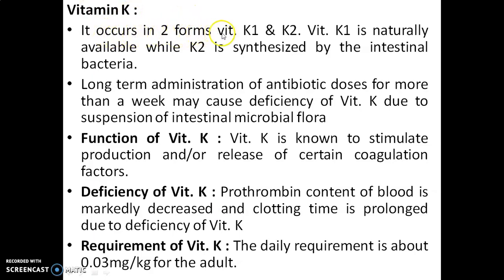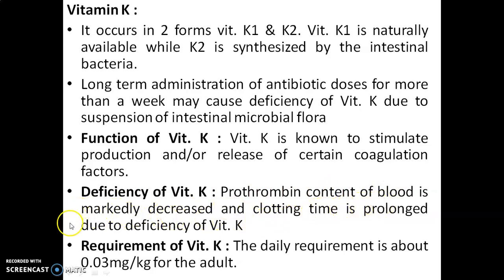Vitamin K occurs in two forms: vitamin K1 and K2. Vitamin K1 is naturally available, while K2 is synthesized by intestinal bacteria. Long-term antibiotic administration for more than a week may cause deficiency of vitamin K due to suppression of intestinal microbial flora. Vitamin K stimulates production and release of certain coagulation factors. In deficiency, prothrombin content of blood is markedly decreased and clotting time is prolonged. The daily requirement is about 0.03 milligram per kg for adults.